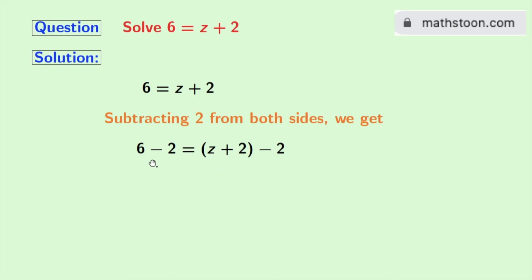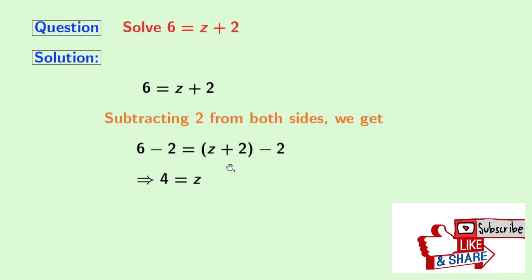So in the left hand side after subtraction we get 4 and in the right hand side there is plus 2 and minus 2 which is 0. So we have z.